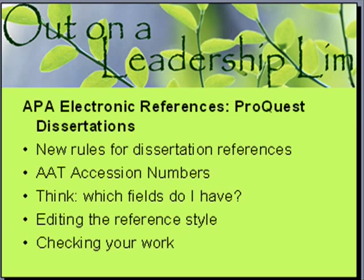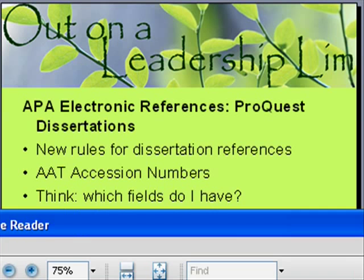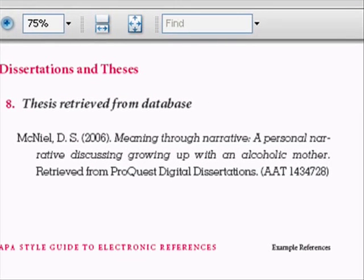So first let's just take a look at the new rules for dissertation references. This is the PDF of electronic styles from APA that I bought, and I just want to show you this reference here. This is how the dissertation references are supposed to look now. Notice that it has where I got it, and it has this accession number, and it no longer has the actual university and city and all that information. So it's quite a bit different, and we need to do some fixing to make this actually work properly.